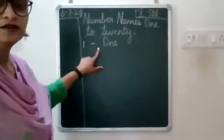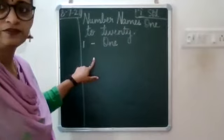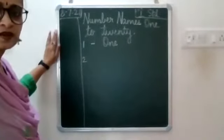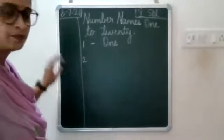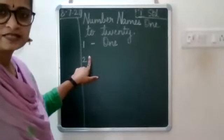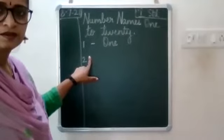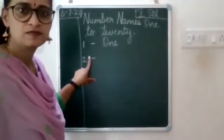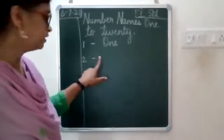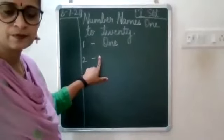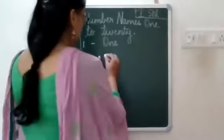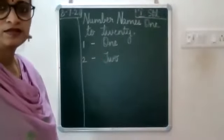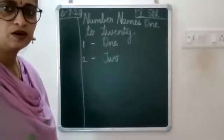After you write ONE, leave one line — do not write one below the other, leave a line and then write 2 near the margin. Then leave one finger space, put a small hyphen, again leave one finger space, and write the spelling of TWO — T-W-O, two.